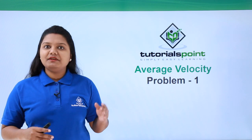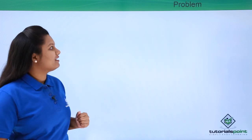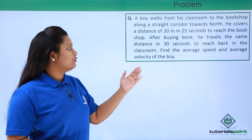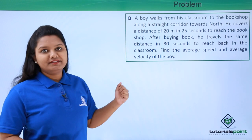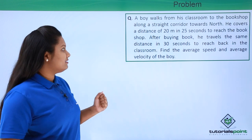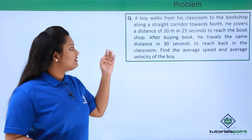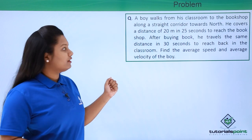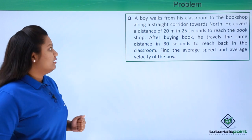Hello everyone. In this video we'll be solving a problem related to average velocity. A boy walks from his classroom to the bookshop along a straight corridor towards north. He covers a distance of 20 meters in 25 seconds to reach the bookshop. After buying a book, he travels the same distance in 30 seconds to reach back to the classroom. Find the average speed and the average velocity of the boy.